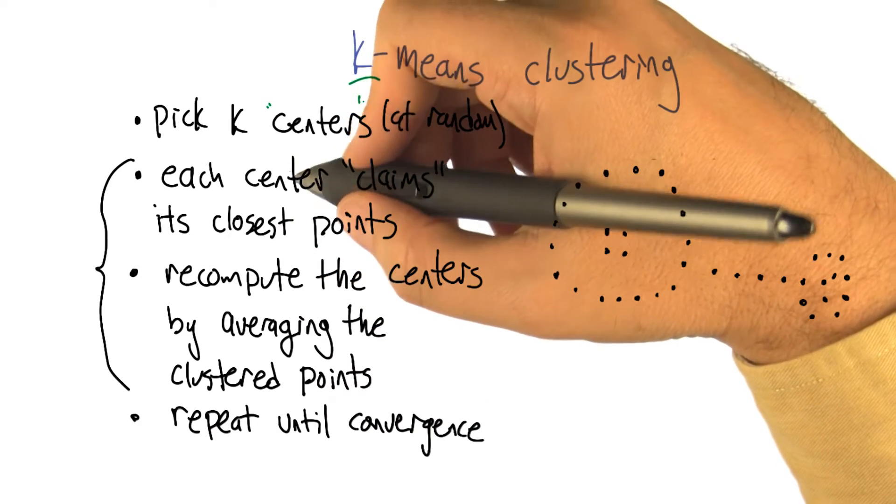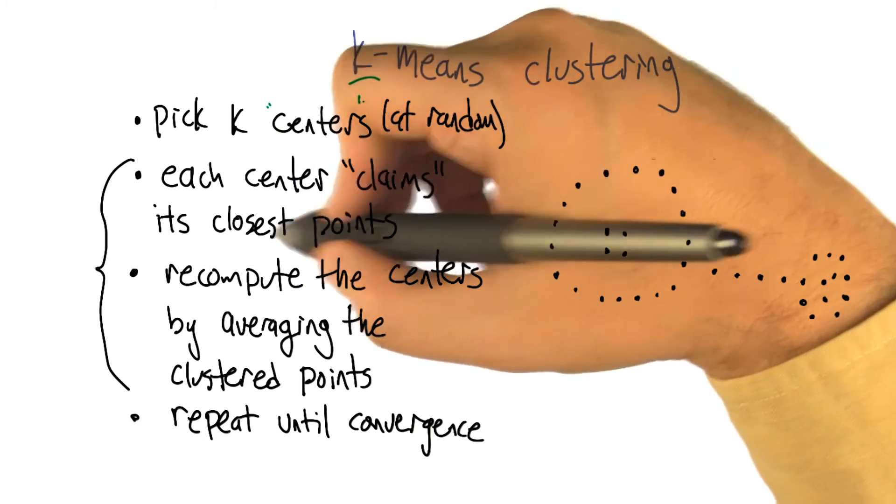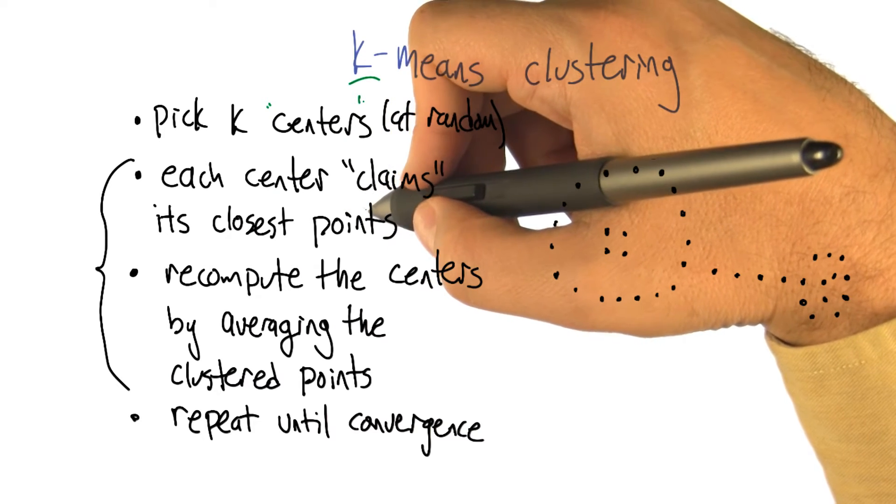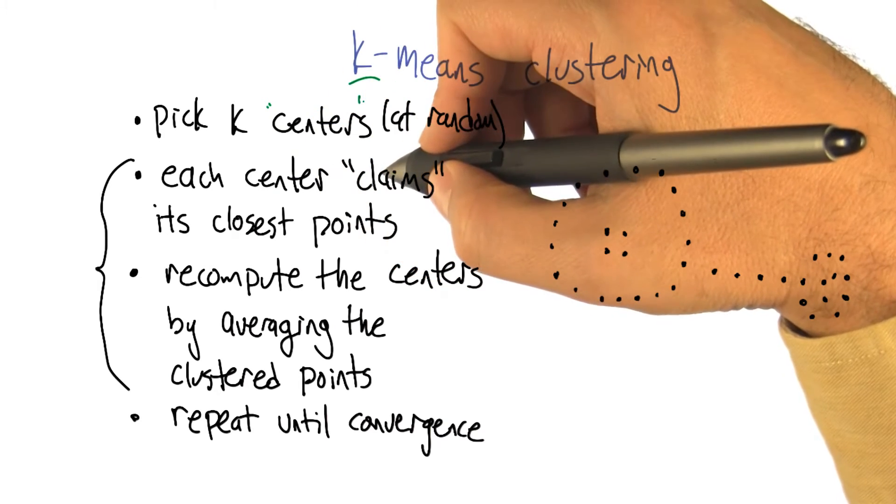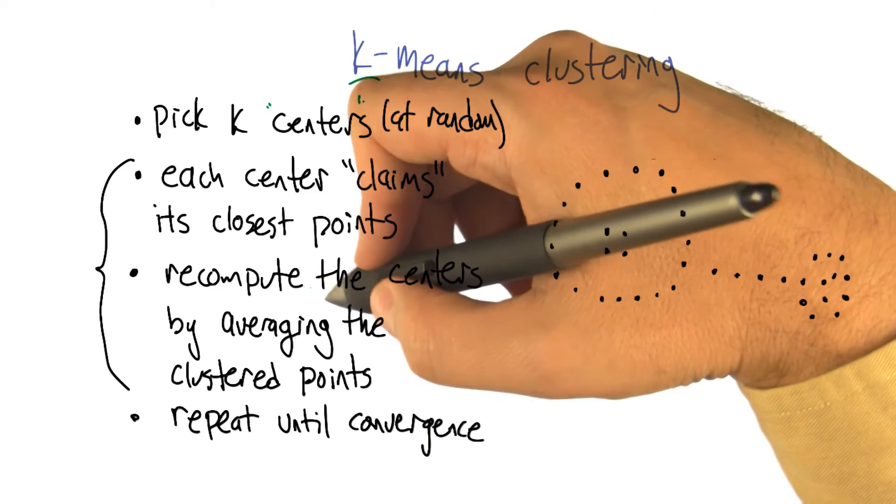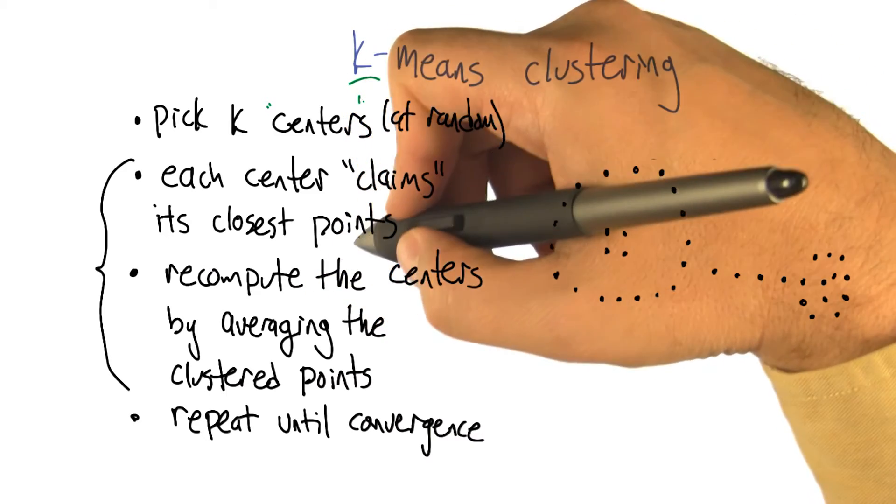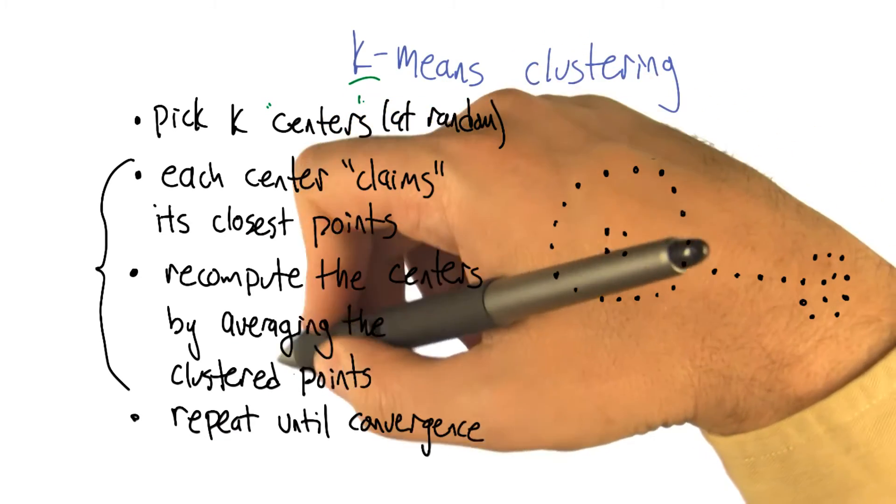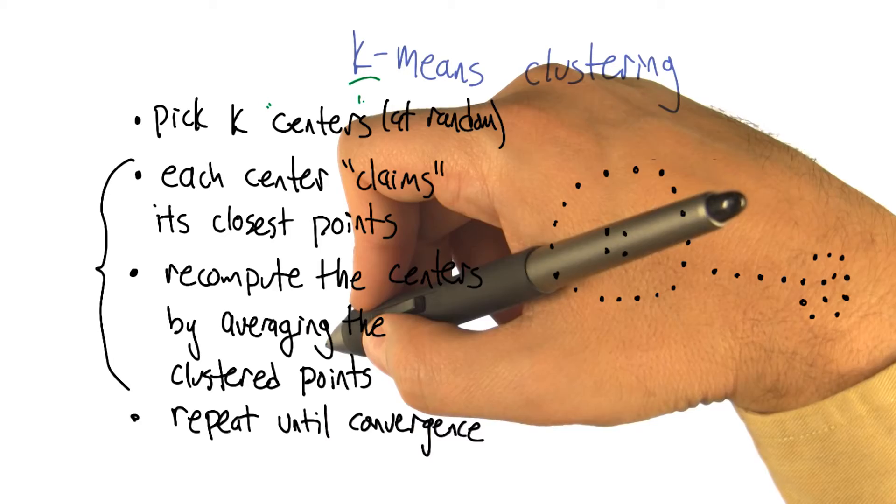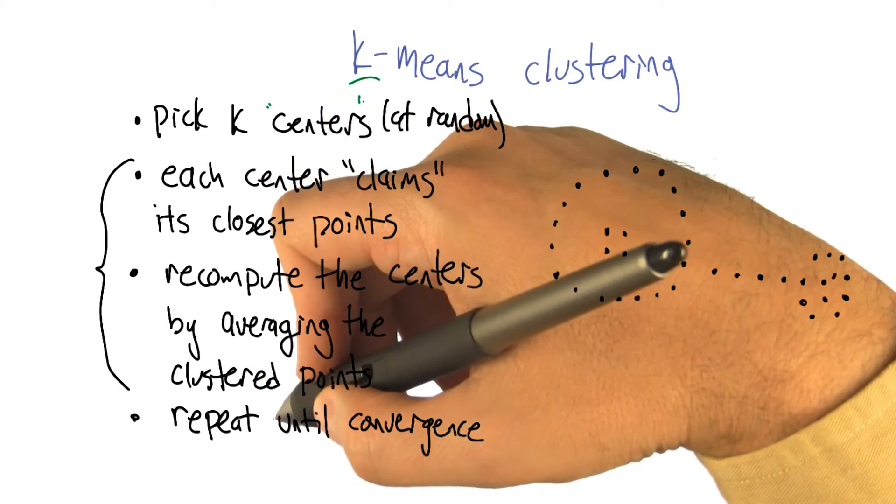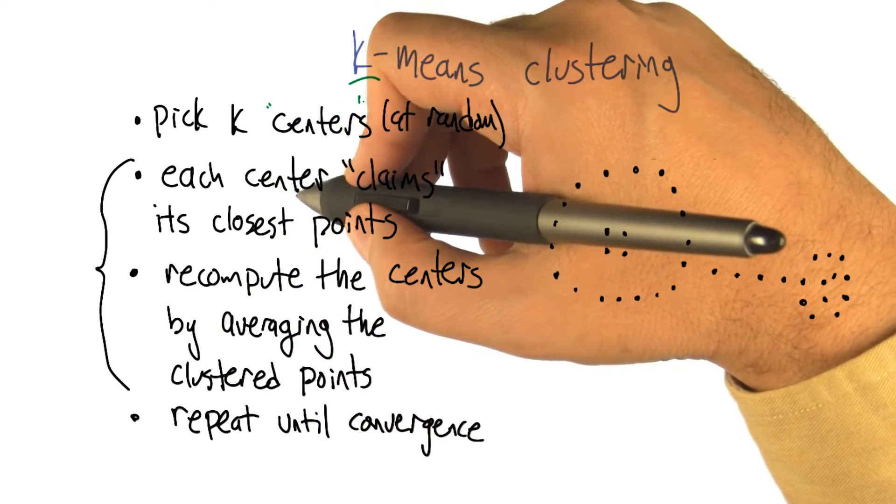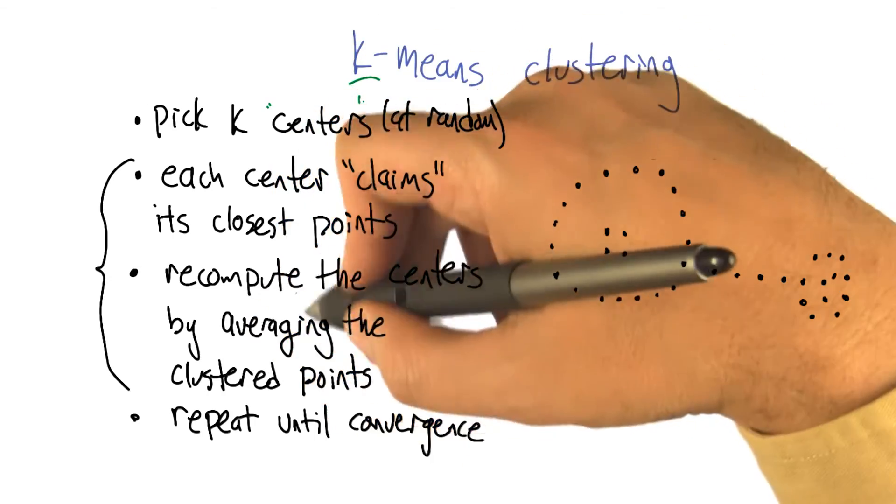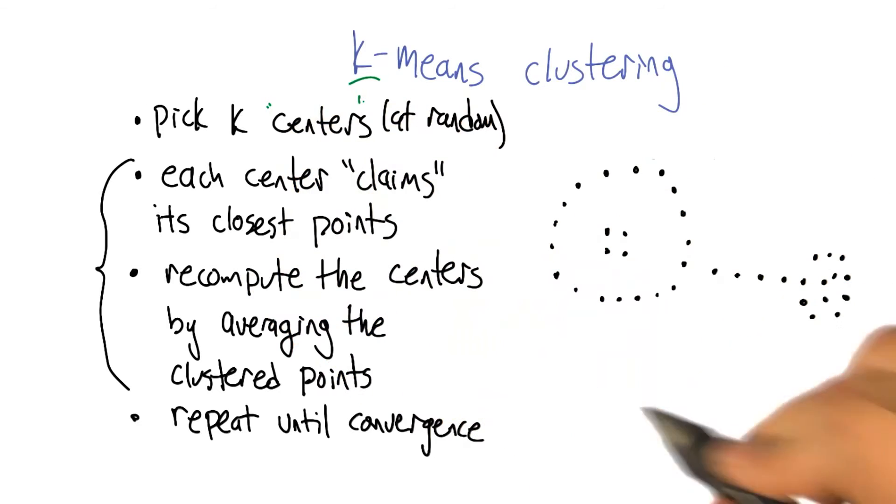And then we're going to repeat the following process. Each center is going to claim its closest points. So we're going to cluster all the points based on how close they are to the k centers that we've defined. Then we're going to recompute based on that clustering that we just did. Recompute the centers. And the center will be the average of the points in its cluster. And then we're going to tick-tock back and forth. We're going to go back and repeat until convergence for the new centers claiming their closest points. The new groups of points computing their average and back and forth like that.